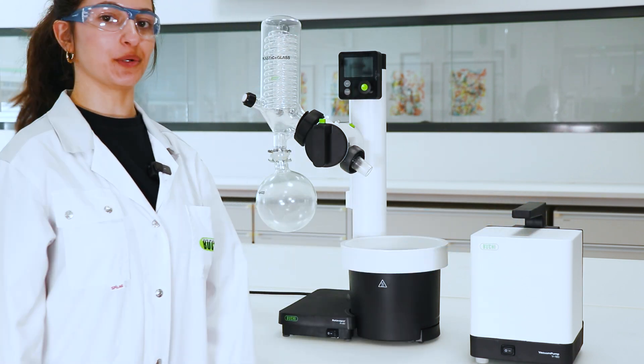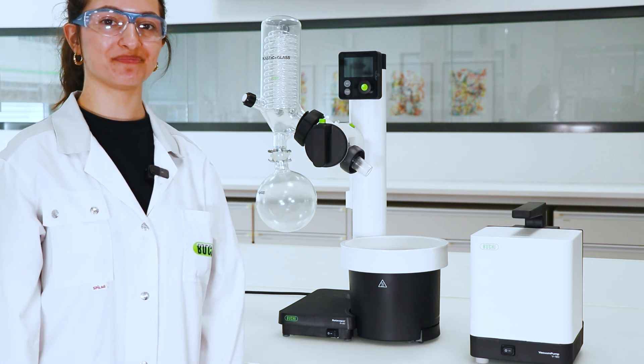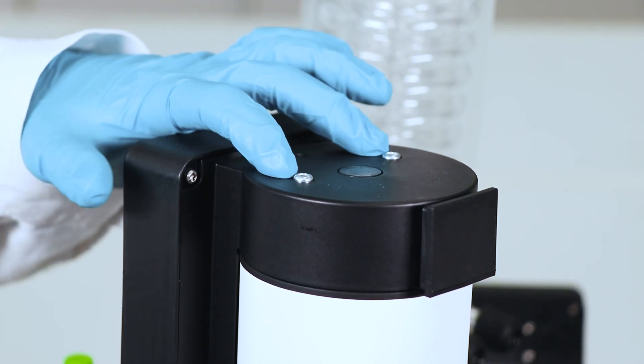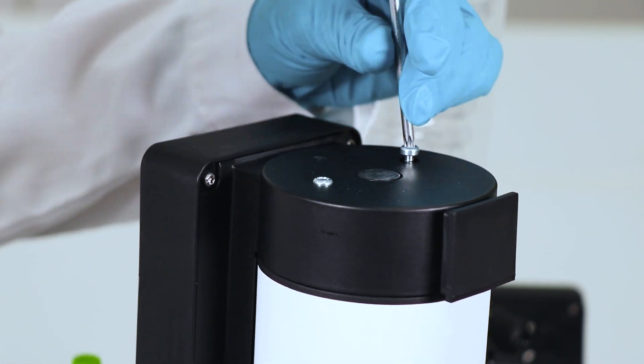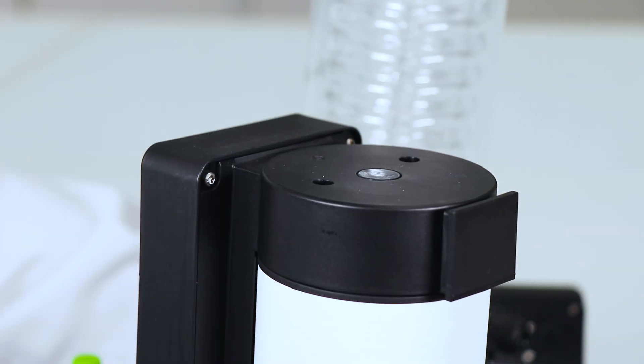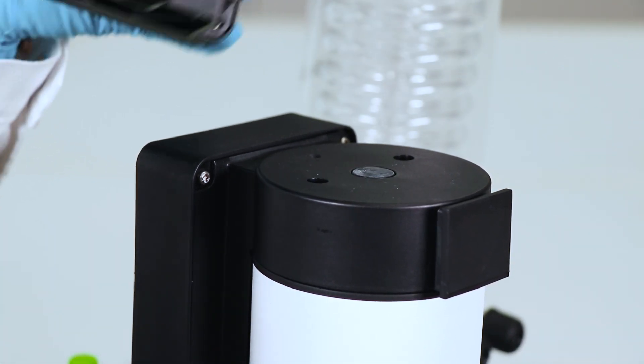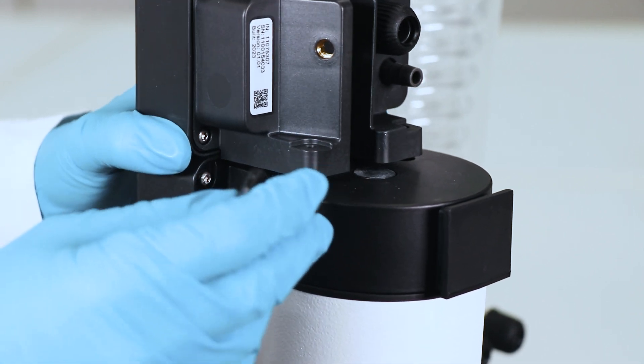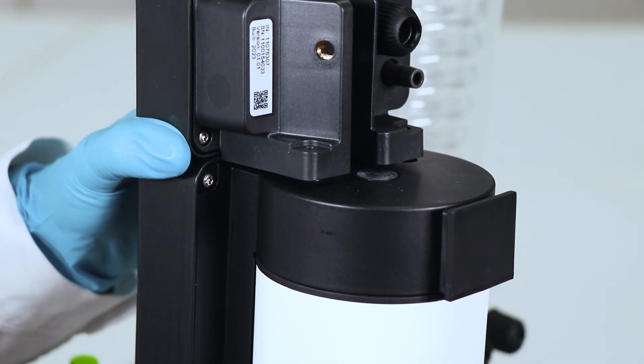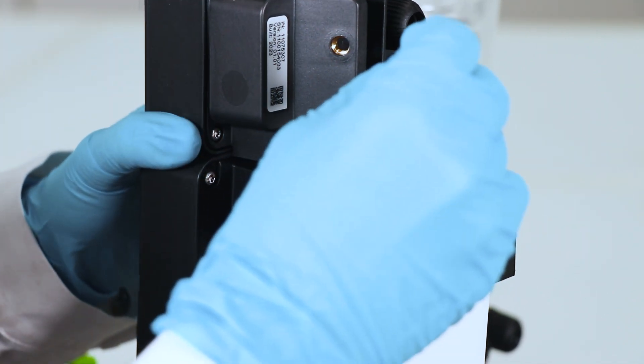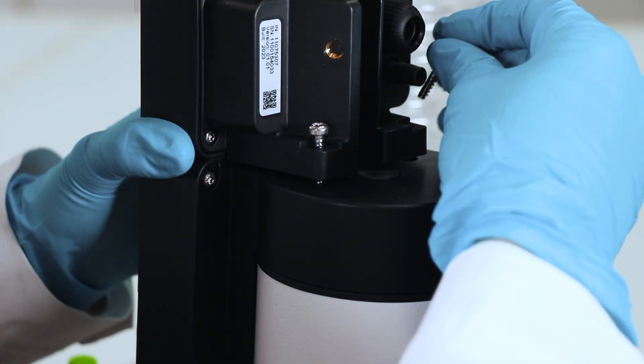We're going to connect that to the power and I will show you later how we connect the vacuum to the R80. So the first thing we do is we take out these two screws. Then we place the interface I-180 on top of this one. And we take the longer screws to place them back in here.